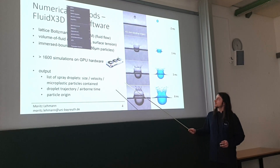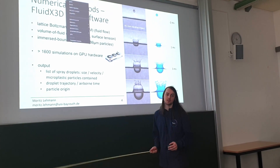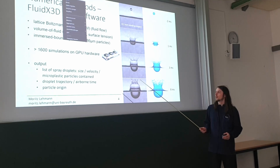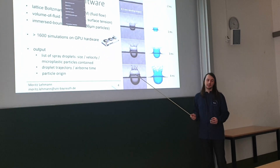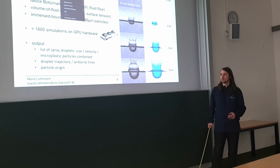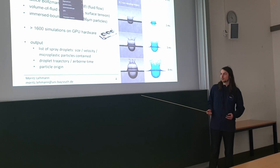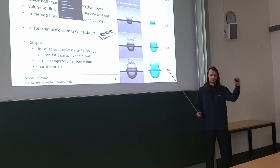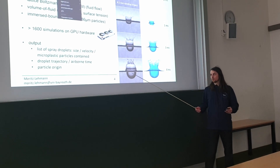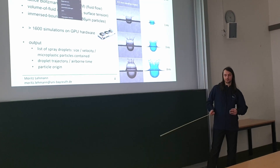The software is very efficient, so I did more than 1600 simulations on GPU hardware — gaming GPUs. The results I get are a list of all the spray droplets with their size, their velocity, and how many particles are in each droplet. From this I can figure out the trajectory — how the droplets fly through the air, how they evaporate, and also the airborne time. And because it's a simulation I can reverse time to figure out where the particles came from.